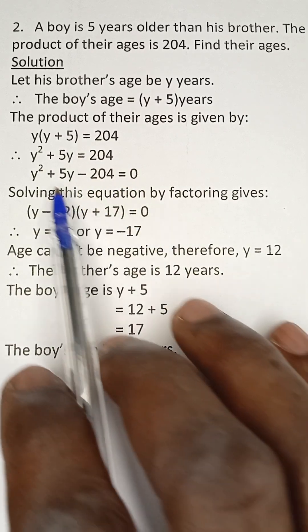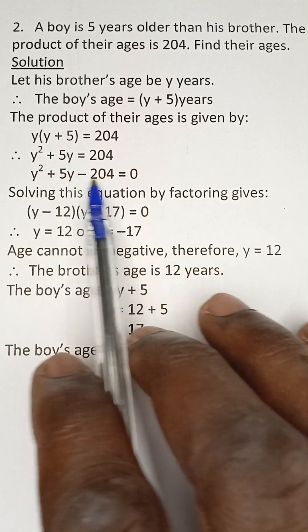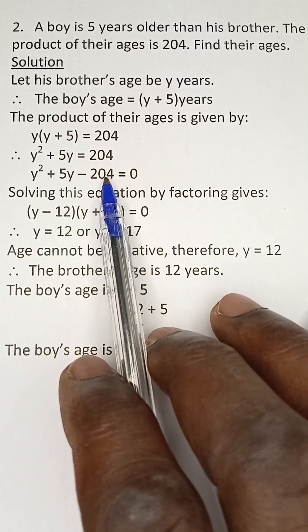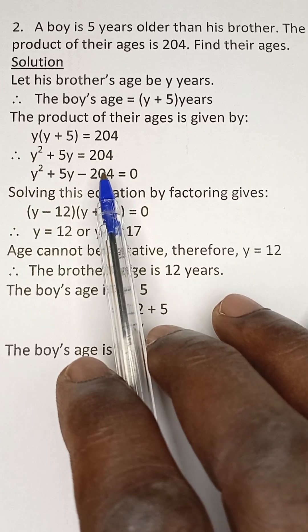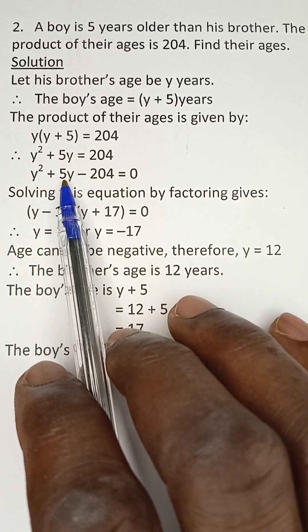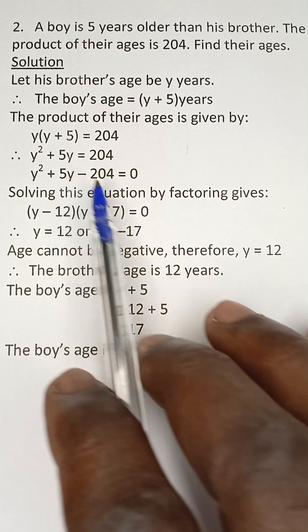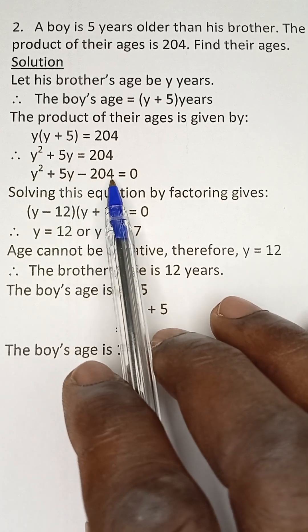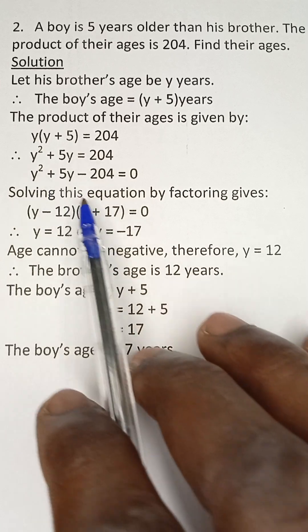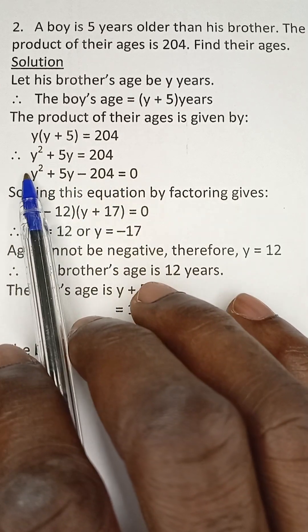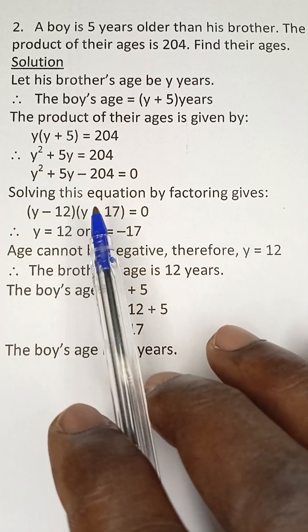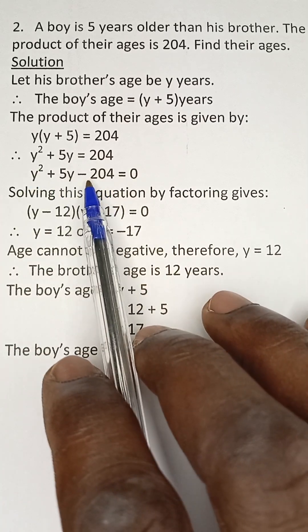Now for us to solve this by factoring method, what we just need to do is to look for two numbers such that their product is negative 204 and their sum is plus five. We only use this direct method when the coefficient of y squared here is one. This is like one y squared.